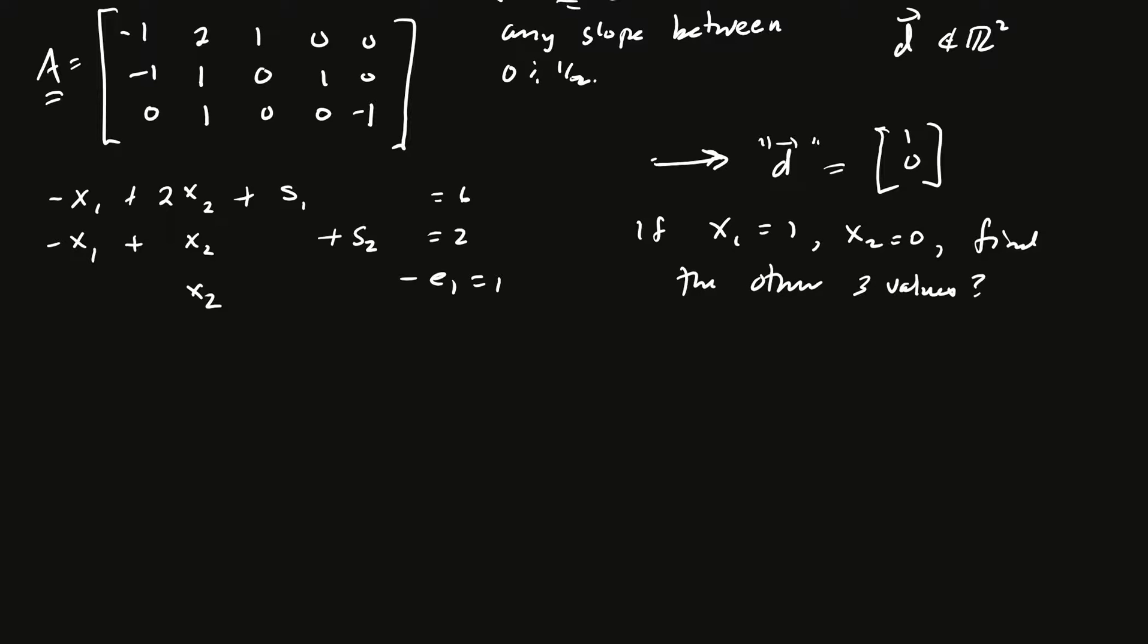Well, if x1 equals 1 and x2 equals 0, can we find the other three values? Well, you just plug them in. And so, let me pause for a second. I should really put a different thing here because if this is my matrix A, then we want to remember that A times D must be equal to 0. And so, it can't be equal to 6, 2, 1. It has to be 0, 0, 0. And so, when you're looking for your direction of unboundedness, we want to remember that that must be true. So, then let's plug things in. We're going to be solving for S1, S2, and E1.